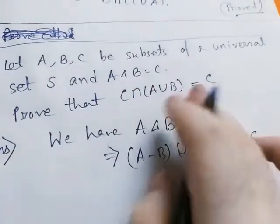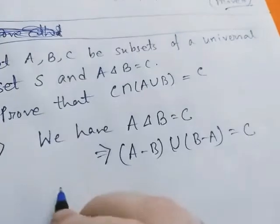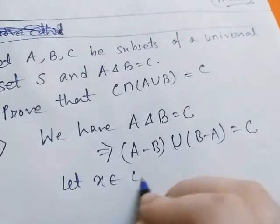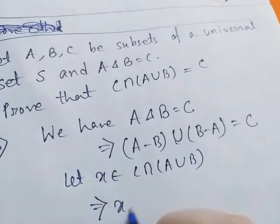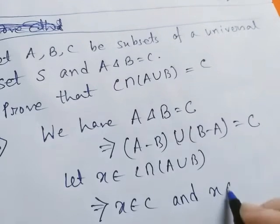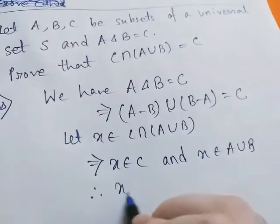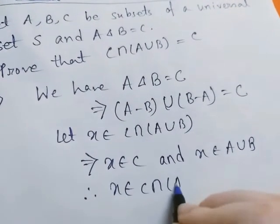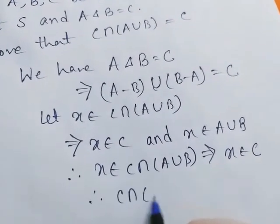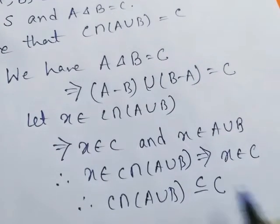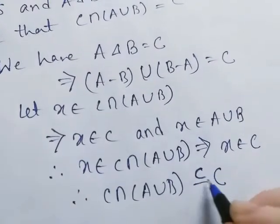To show these two sets are equal, first we show C intersection A union B is a subset of C. This is obvious: let x belong to C intersection A union B. This implies x belongs to C and x belongs to A union B. Therefore x belongs to C, so C intersection A union B is a subset of C. By the same logic, C intersection A union B is also a subset of A union B.